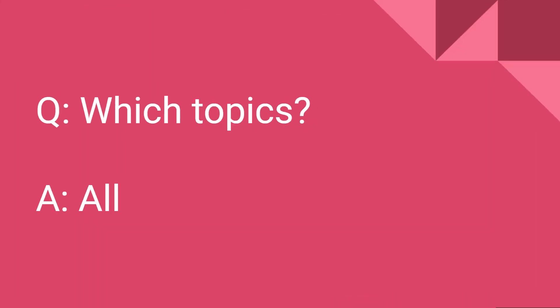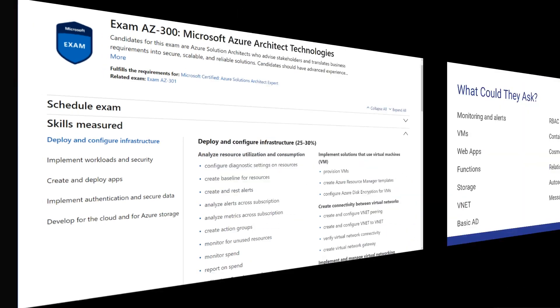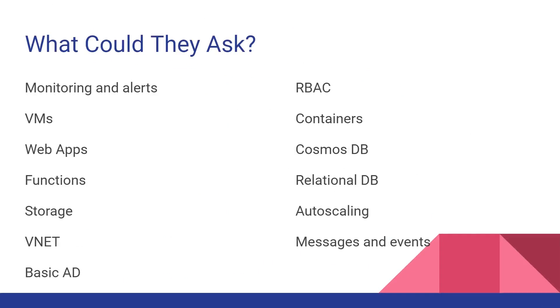People often ask what kind of topics to expect in a performance lab test. The simple answer is: when you look at the exam syllabus and curriculum that Microsoft puts out, everything Microsoft could possibly ask is in scope. For the AZ-300, for example, all topics listed on the exam could potentially be something they want you to do yourself in the portal — virtual machines, web apps, functions, storage, virtual networks, containers, databases, scaling. Almost anything.